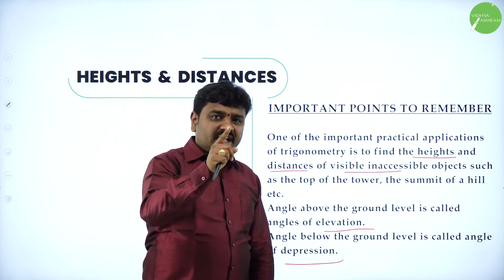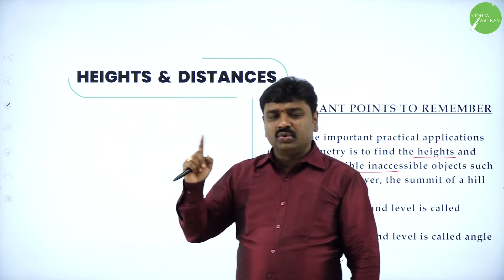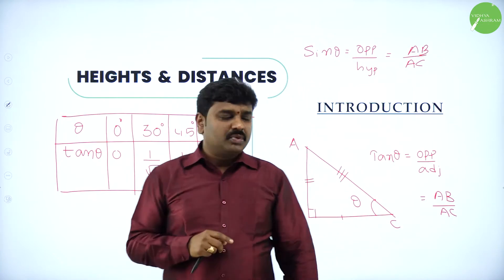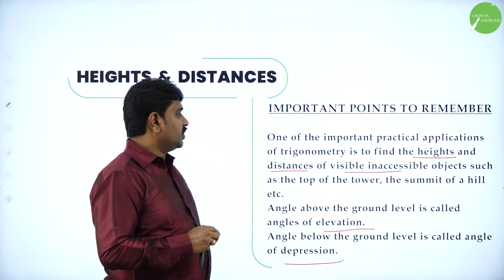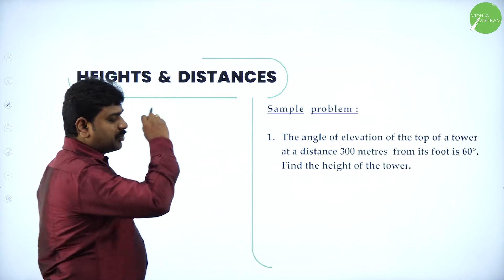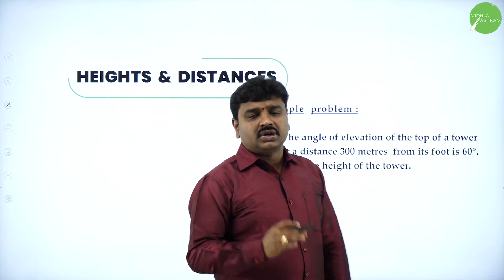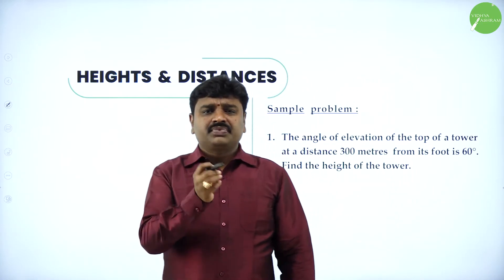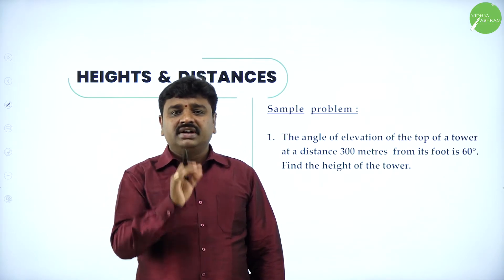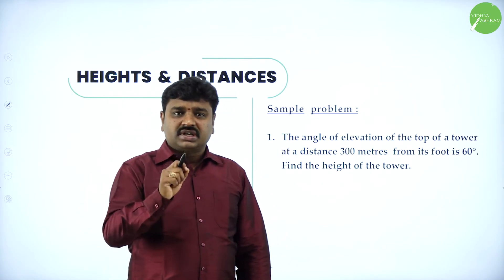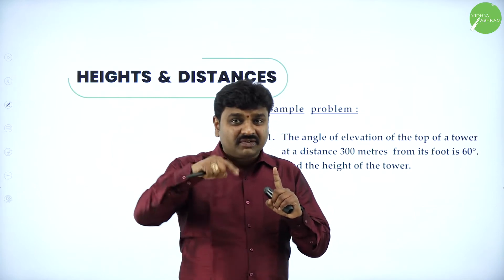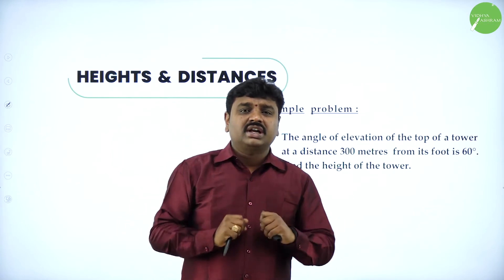That is why I told you to become thorough with the angle values of tan: tan 0 is 0, tan 30 is 1 by root 3, tan 45 is 1, tan 60 is root 3, and tan 90 is infinity. First memorize the tan values and trigonometric functions. Now we will go to the problems. In this exercise or chapter, after you read the question, you will be able to draft a diagram. If you can draft a diagram — which is a right angle triangle or a triangle — you can definitely solve the problems. Understanding the problem and converting it into a picture or diagram is the basic skill required here.